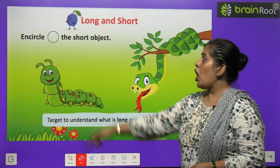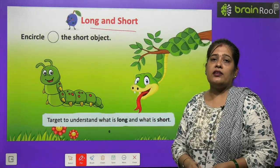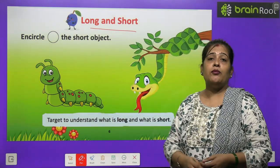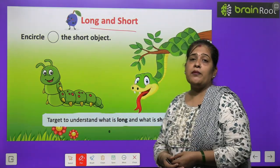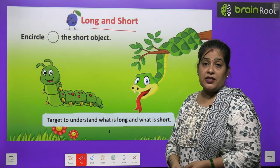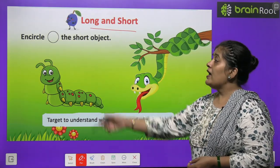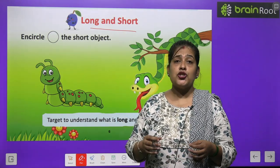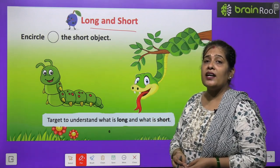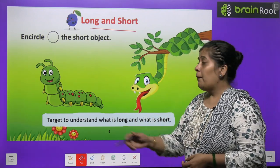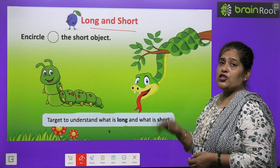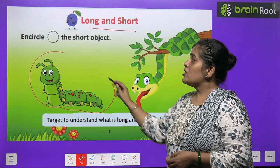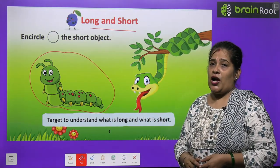Now the next topic is long and short. Long کا مطلب ہوتا ہے لمبا اور short کا مطلب ہوتا ہے چھوٹا. دیکھئے بچوں اس میں کتنی سندھت caterpillar اور snake کی پچھر بنی ہوئی ہے. Circle the short object — دونوں میں سے جو object چھوٹا ہے اس کو circle کرنا ہے. Caterpillar is short, so we will make a circle on it.